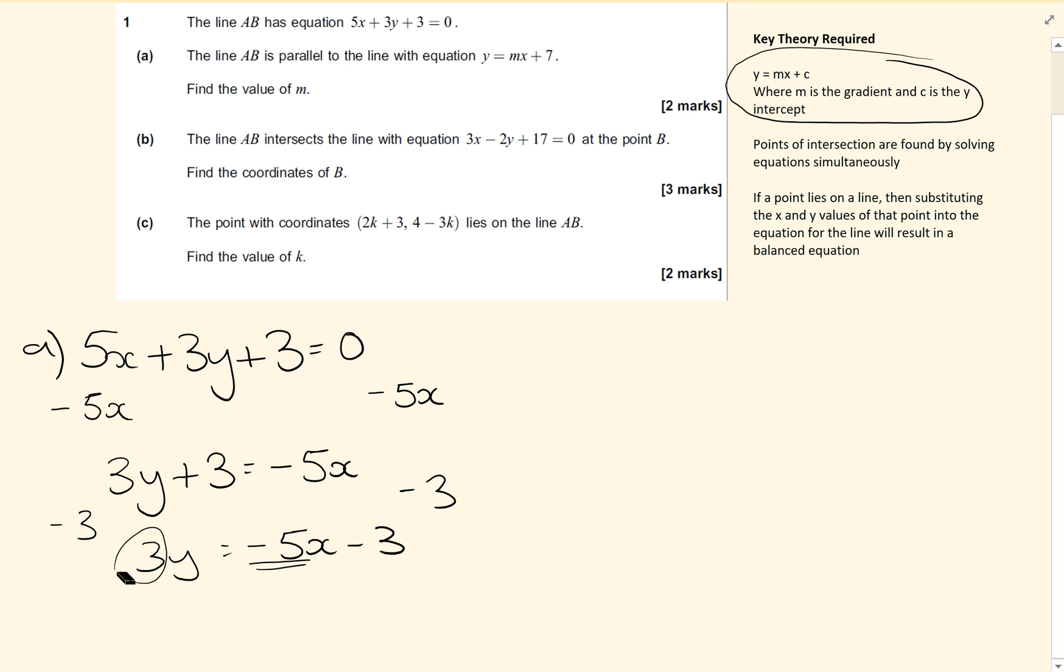So the final step is to divide by 3. So we divide each part of this equation by 3, leaving me y equals minus 5 thirds x minus 1.